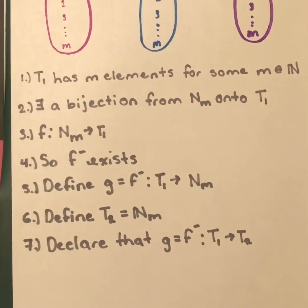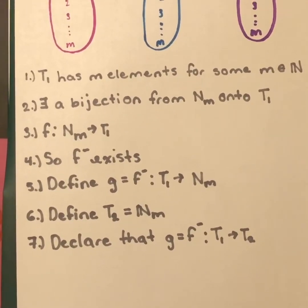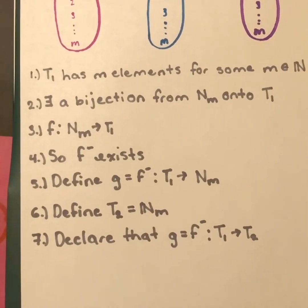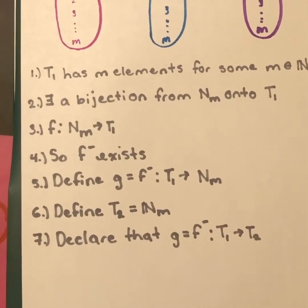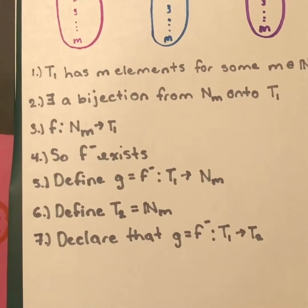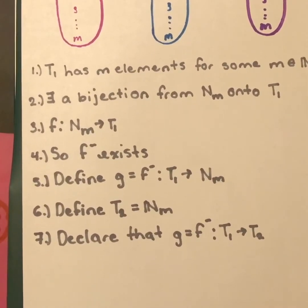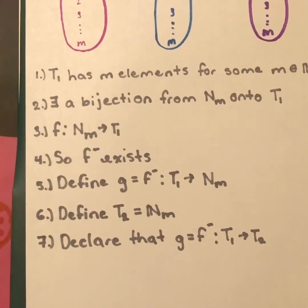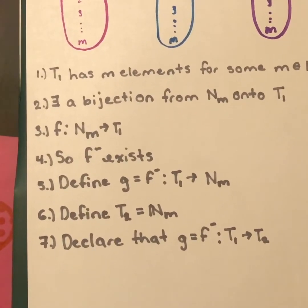Further, there exists a bijection from the natural numbers Nm onto the set T1. Let f be a function that describes this bijection from the set of natural numbers sub m onto the set T1.